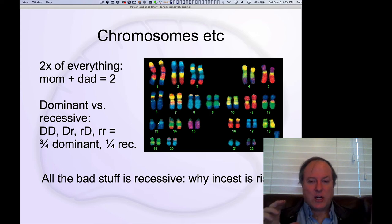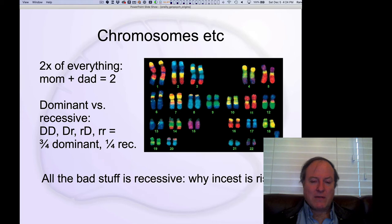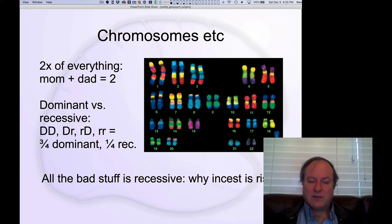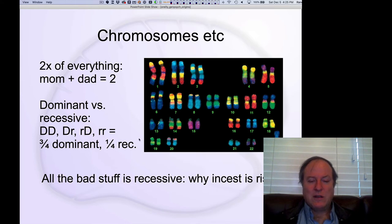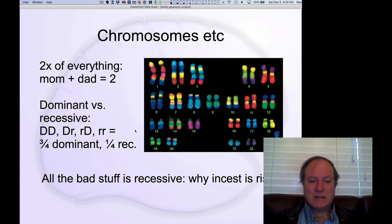That genetic code is packaged into different chunks called chromosomes, and you end up with two copies of each of these different chromosomes. There are 23 different chromosomes — one you get from your mom and the other from your dad. Two copies are expressed in terms of dominant versus recessive genetics. Across these two genes, you can get two dominant, one dominant and one recessive, or both recessive. Three quarters will have at least one dominant, and only one quarter are recessive — and that recessive subset is where the major forms of illness persist. That's why incest is risky.